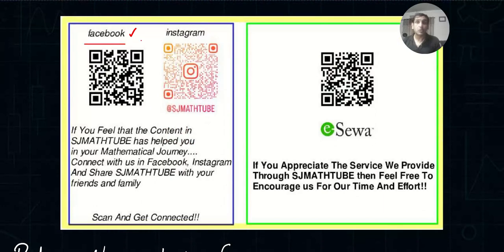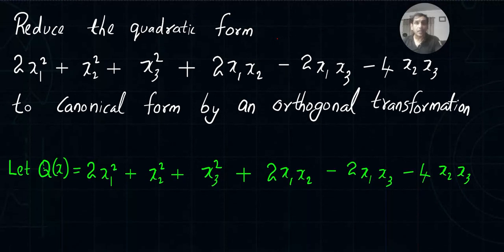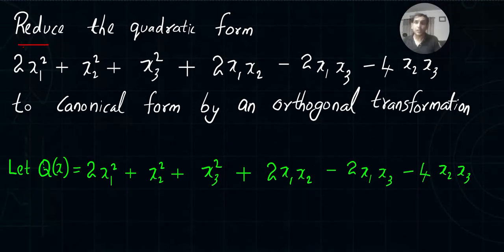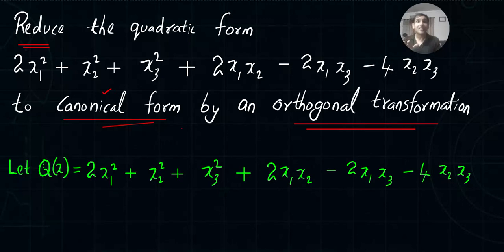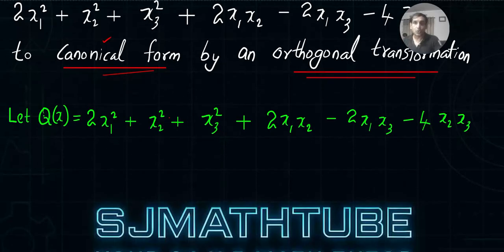In your examination, the typical question will be: 'Reduce the quadratic form to canonical form by orthogonal transformation.' If you know diagonalization, this will be straightforward. This problem tests whether you're prepared — covering eigenvalues, eigenvectors, model matrix, normalization, and diagonalization — plus one more step to get the canonical form. Reducing to canonical form is essentially the same process as diagonalization.